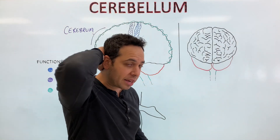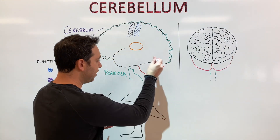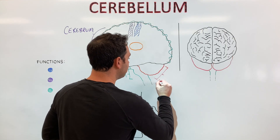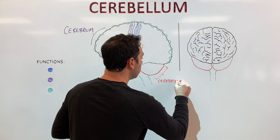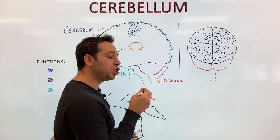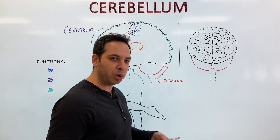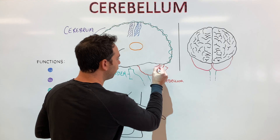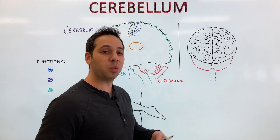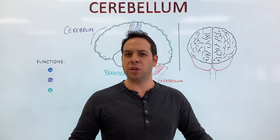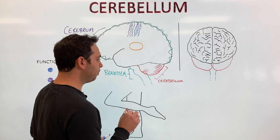Now directly behind the brainstem, right in the back of the head and underneath the cerebrum — more specifically the occipital lobe — is our main structure for today, shown in red: the cerebellum. The cerebellum comes from the word meaning "little brain." Why is it called little brain? Because of its striking resemblance to the cortex of the brain. In this picture it looks very smooth, but it's actually got a cortex with a lot of folds and wrinkles, similar to the cerebral cortex. It is packed with neurons, and as a general rule of thumb, if a part of the brain is packed with neurons, you know it plays a vital role in everything we do.